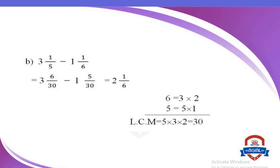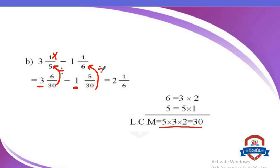Another example: 3 and 1 over 5 minus 1 and 1 over 6. As with addition, write the whole numbers as they are: 3 and 1. Find the LCM for 5 and 6. 6 equals 3 times 2; 5 equals 5 times 1. The LCM will be 30. New denominator is 30. 30 divided by 5 equals 6; 6 times 1 equals 6, so I write 6 over 30. 30 divided by 6 equals 5; 5 times 1 equals 5. So the answer is 3 minus 1 equals 2, and 6 over 30 minus 5 over 30 equals 1 over 30. The answer is 2 and 1 over 30.